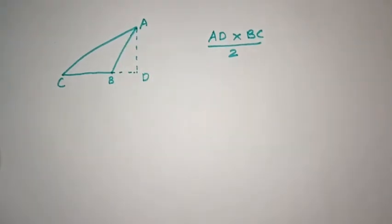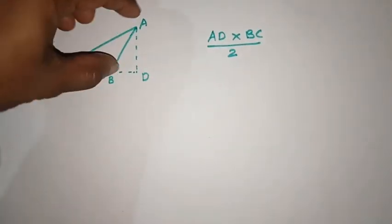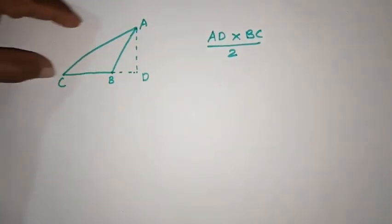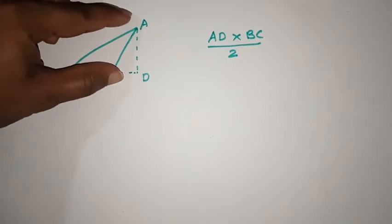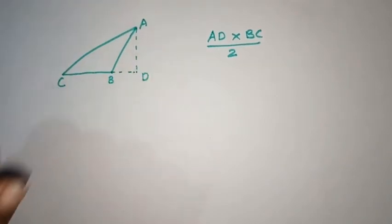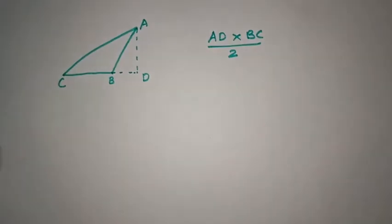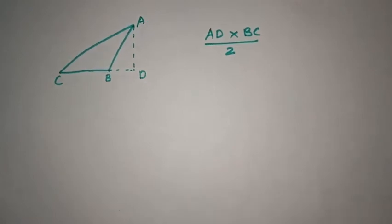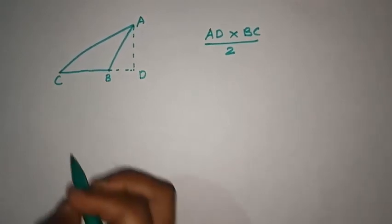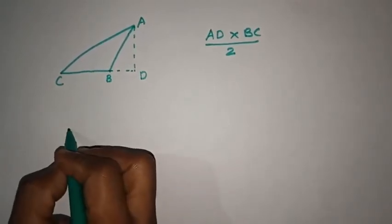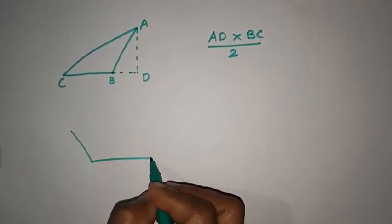Now, let's put this triangle in this triangle. This is AD. I am going to add AD into BC by 2 — that is the formula: AD into BC by 2. Let's take a look at this and also take a look at this triangle.